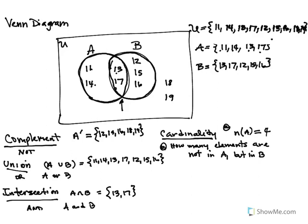Here is a cardinality question that uses words instead of notation: how many elements are in A but not in B? The elements in A are 11, 14, 13, and 17, but 13 and 17 are also part of set B so we cannot include those. That leaves two elements — 11 and 14 — as the answer.